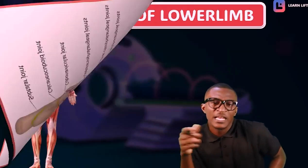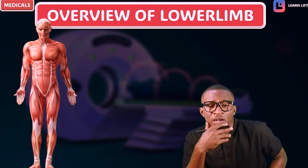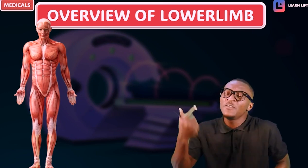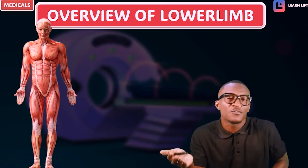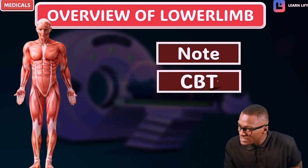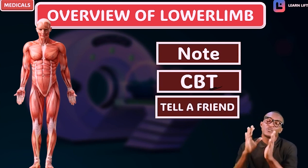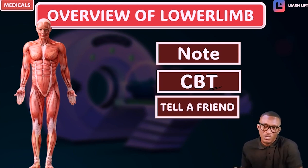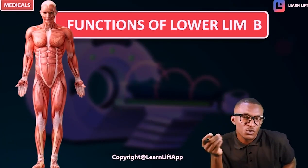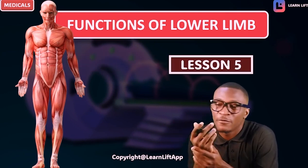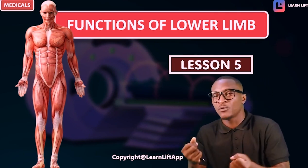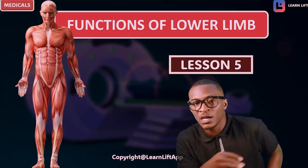If you understand that, that's everything about the joints of the lower limb. The work is in the foot joints — you can pause that and watch it over and over again. But if you're not getting it, just calm down — you're still going to meet it in detail. This is overview. Next class, let's go through the notes, practice CBT, and tell a friend. On this overview first, before we talk about functions, there are 20 MCQ past questions — go through them. Next class we'll talk about the functions of the lower limb, which will be lesson five.